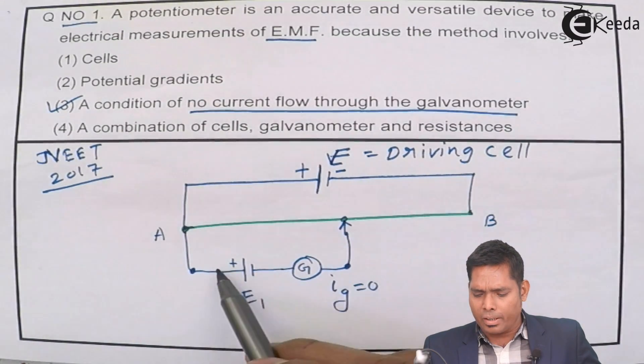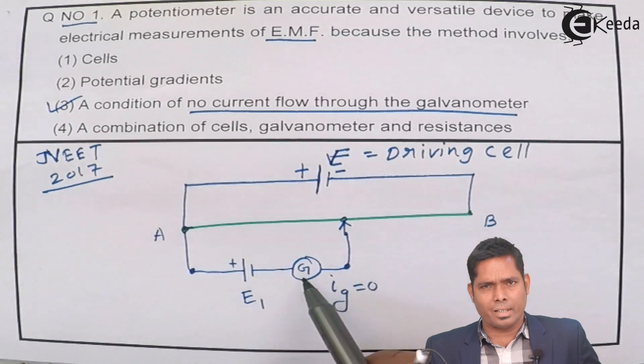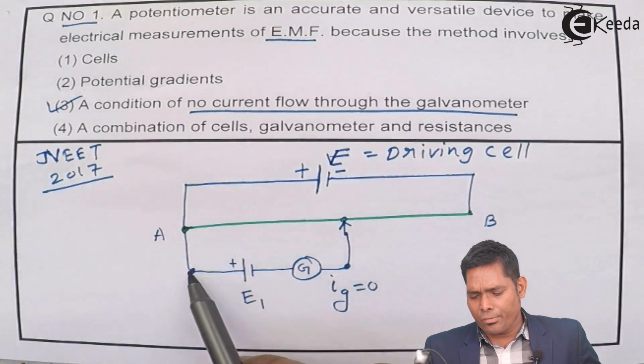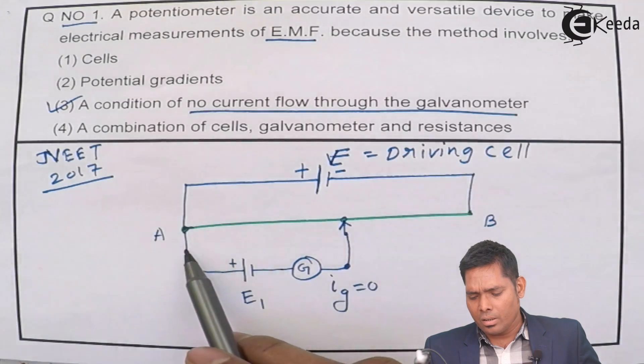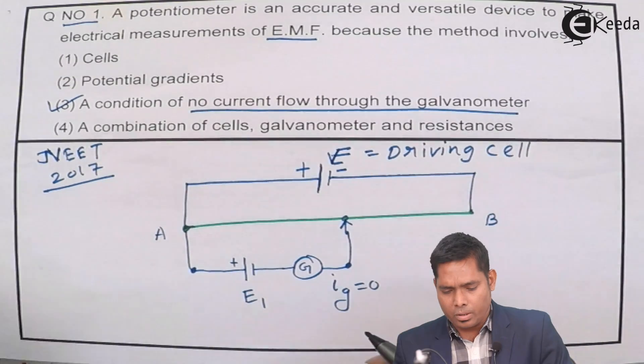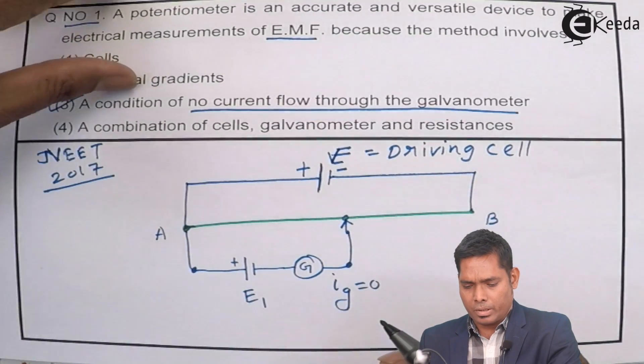When actually no current passes through the battery or cell. If the cell is not sending current, the potential difference that is measured across the cell is known as the EMF of the cell. So that is very important.